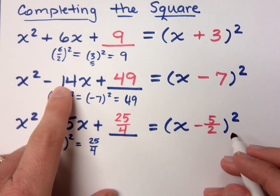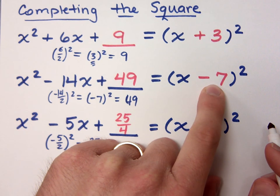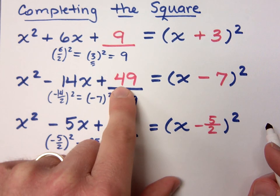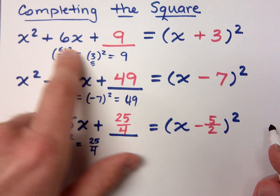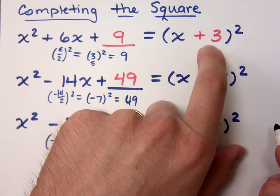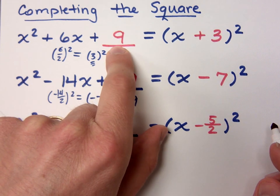What's half of negative 14? Negative 7. What happens when I square negative 7? 49. What's half of 6? 3. When I square that, I get what? 9. Are you all with me on that?